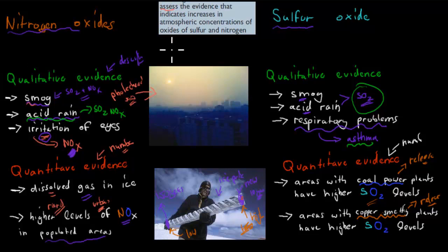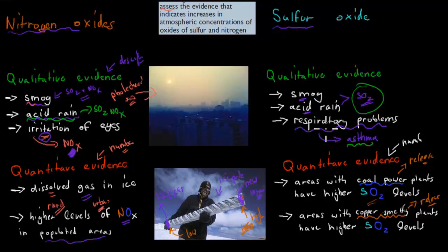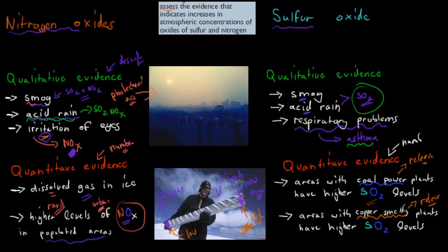So to assess the evidence indicating an increase in atmospheric concentrations of oxides of sulfur and nitrogen: both qualitative and quantitative evidence suggests there is an increase. Qualitative evidence includes smog, acid rain, eye irritation from nitrogen oxides, and increased respiratory problems from sulfur oxides. Quantitative evidence includes ice probes showing higher dissolved gas levels now than 150 years ago, higher nitrogen monoxide and dioxide in urban areas versus rural areas, and higher SO₂ near coal power plants and copper smelting plants.